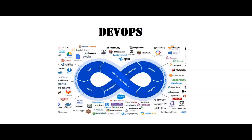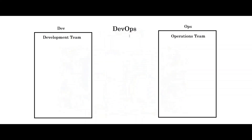Now let's get started. As the name suggests, DevOps is a combination of two terms — dev and ops — which means development team and operations team.